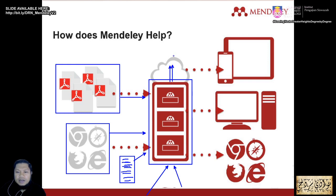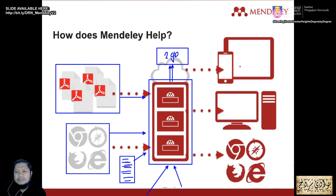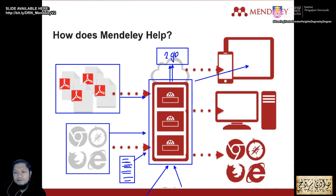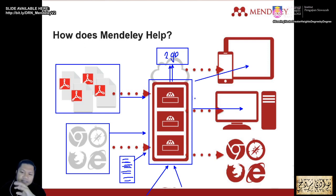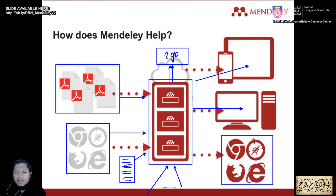Your cloud storage gives you 2 GB, which is enough for your PhD or Masters. Once it's in the cloud, you can access your papers from your mobile or smartphone, sync with another PC at home or at the office, and access all your papers from cloud storage. You can also read whatever you have in your library from a browser using the web version.